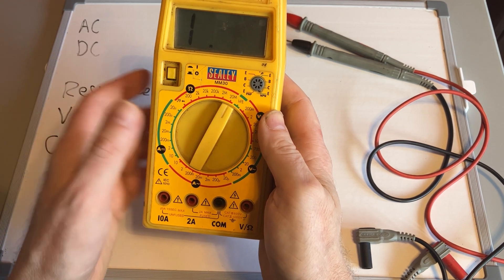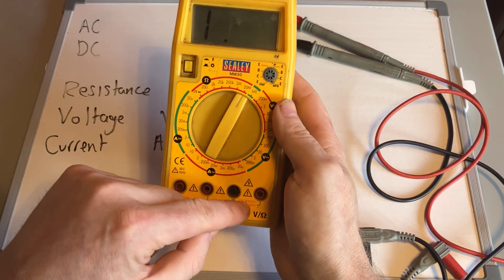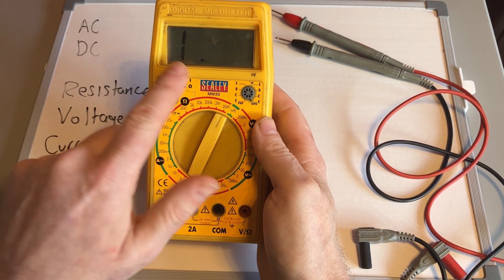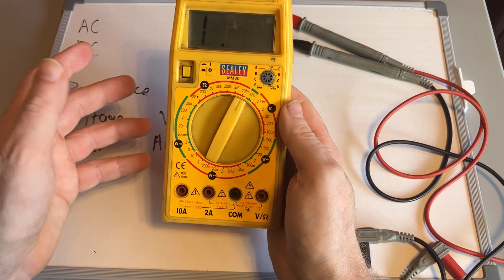If you don't know what you're expecting, the golden rule is always start at the top one. At the moment it's turned on but there's no leads in, so that number one, sometimes it's an OL for open loop, indicates an open circuit—it's not getting a reading.